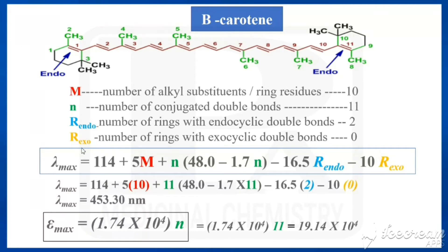For R_exo, the number of rings with exocyclic double bonds: neither ring has an exocyclic double bond, so R_exo = 0. By substituting M=10, n=11, R_endo=2, and R_exo=0 into the equation, we get lambda max = 453.3 nanometers for beta-carotene.